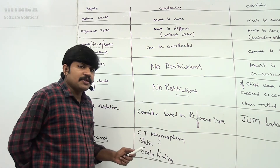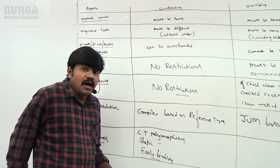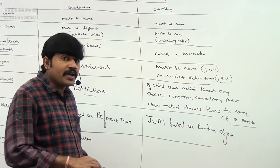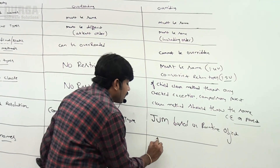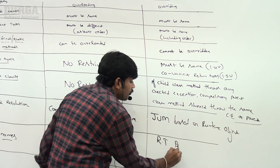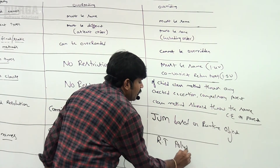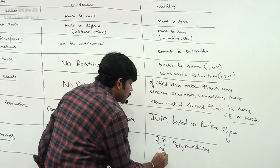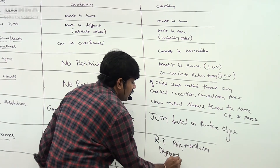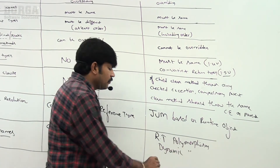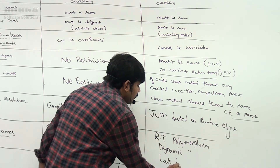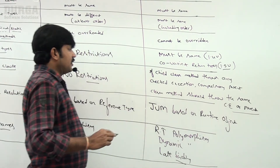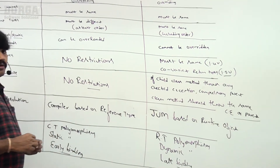Overloading is compile-time polymorphism, static polymorphism, or early binding. Overriding, on the other hand, is handled by the JVM and is known as runtime polymorphism, dynamic polymorphism, or late binding.